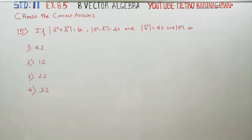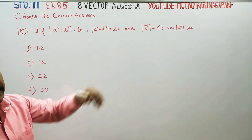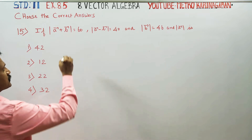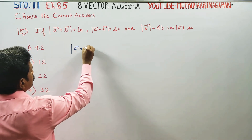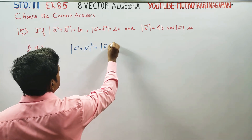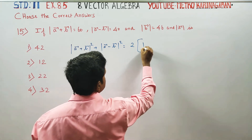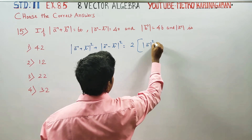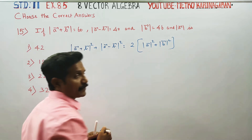Hello 11th standard students, I am Metro Karnagaran. In exercise number 8.5, question number 15, you have to find the value of magnitude of A. That is a ready made formula: magnitude of A plus B whole square plus magnitude of A minus B whole square is equal to 2 times magnitude of A square plus magnitude of B square. This is a ready made formula.